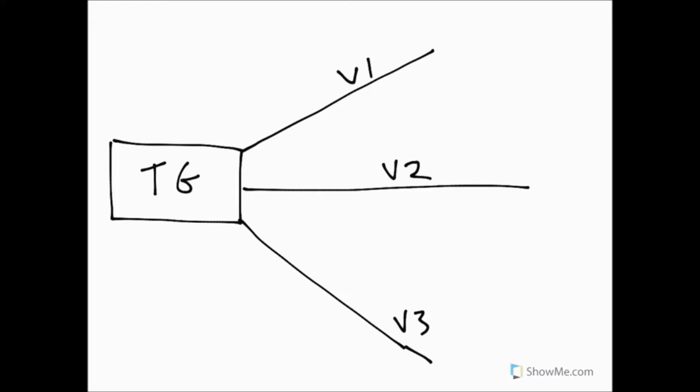And of course, V1 is ophthalmic, V2 is maxillary, V3 is mandibular, and V1 would travel through the superior orbital foramen, V2 through foramen rotundum, and V3 through foramen ovale.